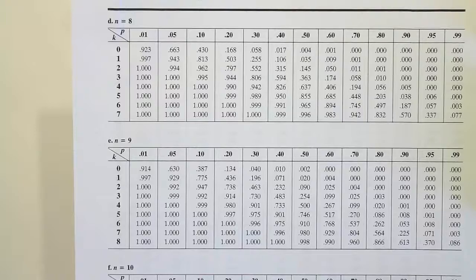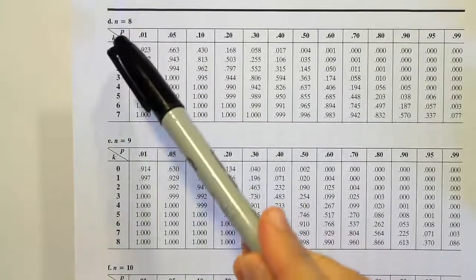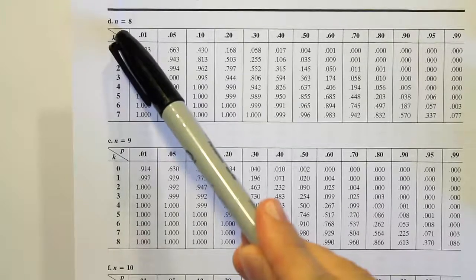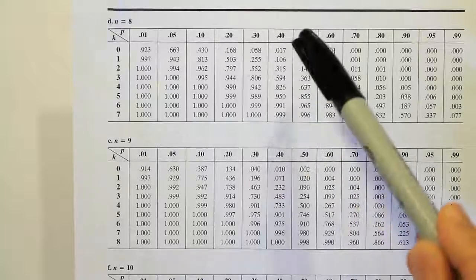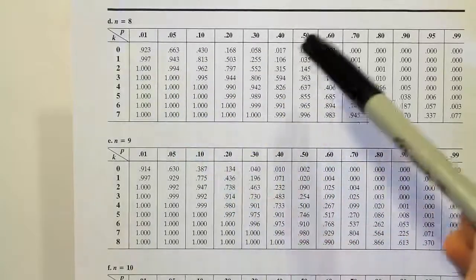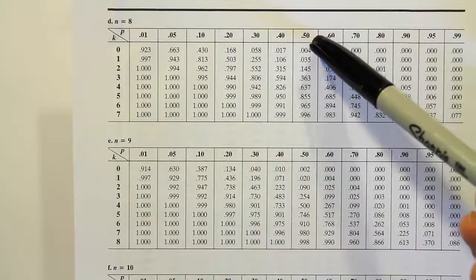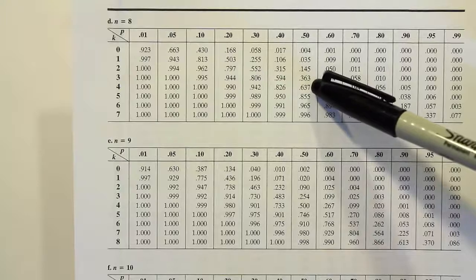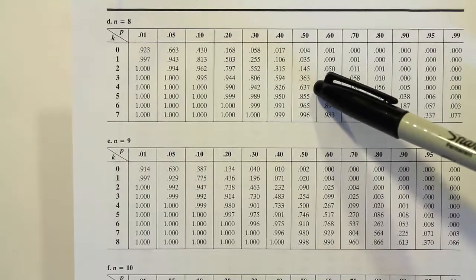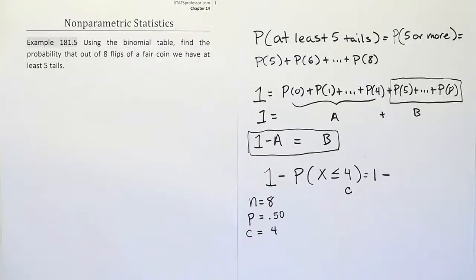Okay. So we're at our binomial table here under n equals 8. And I said it was c, but they used the symbol k. It's the same thing, though. So what I wrote in the problem, c, is really k. But we're going to use n equals 8, p is 0.5, and then we're going to go down to where we see 0, 1, 2, 3, 4, and we get the answer 0.637 as the number we need for our problem.